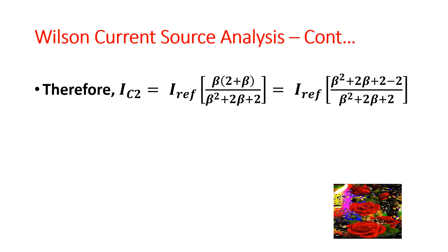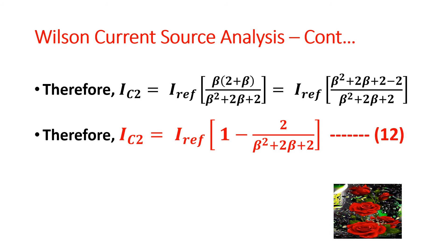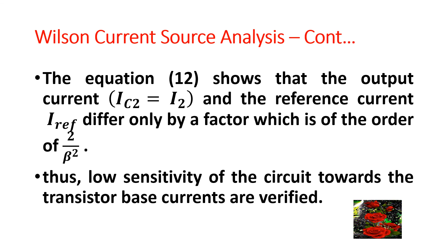Therefore, I_C2 = I_reference · [1 − 2/(β² + 2β + 2)]. Consider this as equation 11. This equation shows that the output current I_C2 (equal to I₂) and the reference current I_reference differ only by a factor of the order of 2/β². Thus, low sensitivity of the circuit towards transistor base currents is verified.